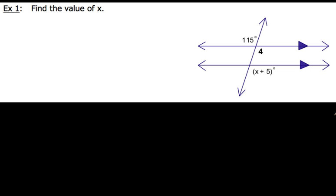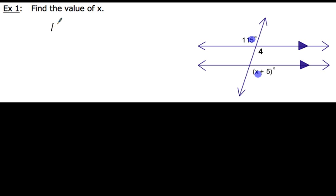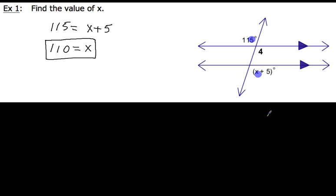Now, when we take a look at finding the value of x, notice our diagram has two parallel lines denoted by the triangles. The 115 degrees and the (x + 5) are alternate exterior angles. By the alternate exterior angles theorem, if two parallel lines are cut by a transversal, those two angles are equal. So I write the equation: 115 = x + 5. Subtracting 5 from both sides, I get x = 110. My directions asked me to find the value of x, and I found it to be 110 — not 110 degrees, just 110, since the angle itself totals 115 degrees.